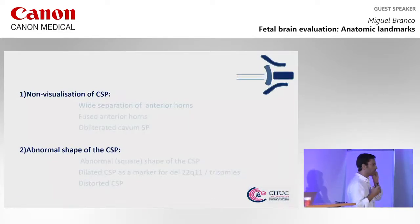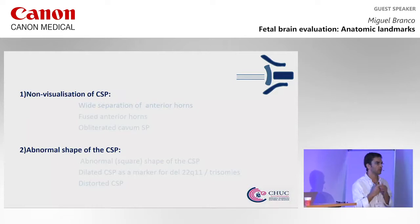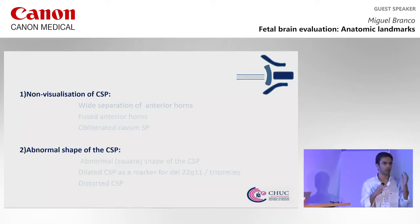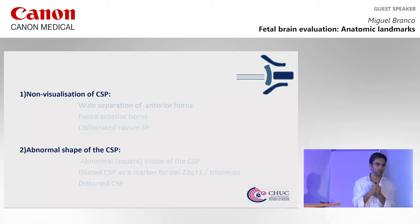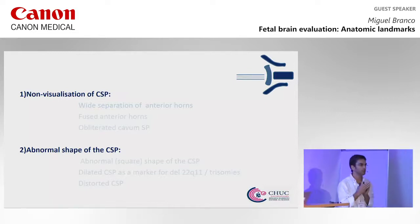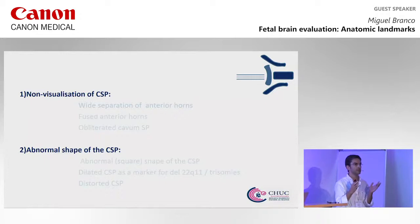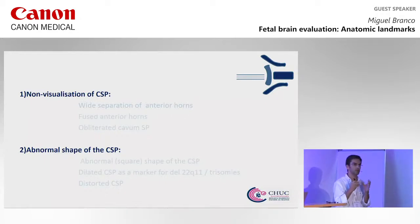I've tried to divide alterations of the anterior complex into two big groups. In the first one, we are not able to visualize the CSP. In the second one, the CSP is present but the morphology is abnormal.